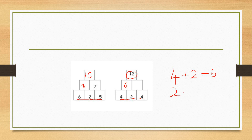We add 2 to 4. 4 plus 2 is equal to 6. 2 plus 4 is equal to 6. So we have to write 6 here. The final answer — 6 in our mind and 6 in our fingers. Then we count: 7, 8, 9, 10, 11, 12. The answer is 12.